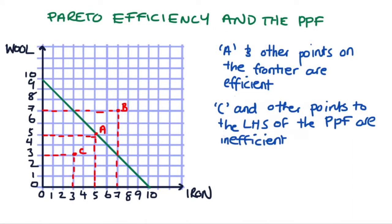But really I'm interested in this video in thinking about in what sense points like A on the frontier are efficient and points like C that are to the left hand side of the frontier are inefficient.